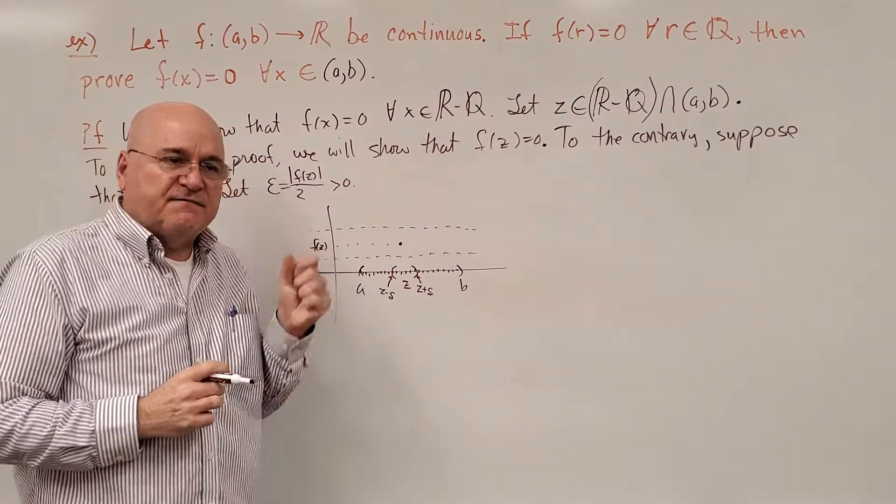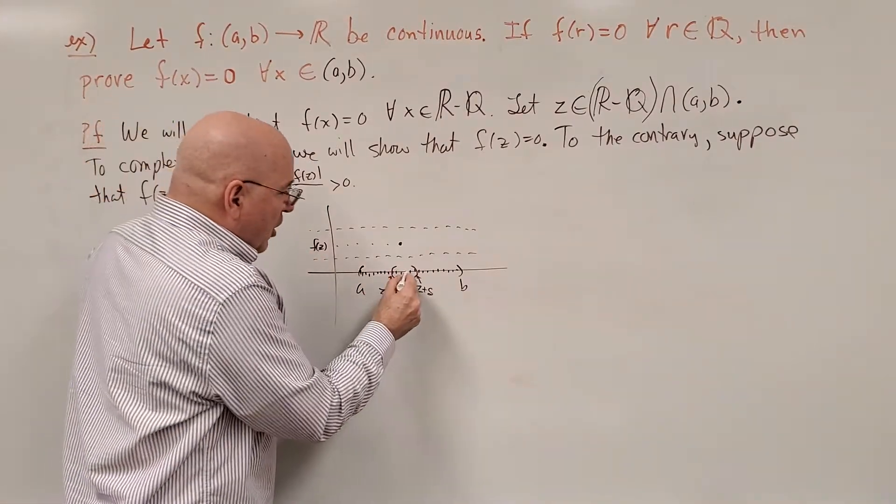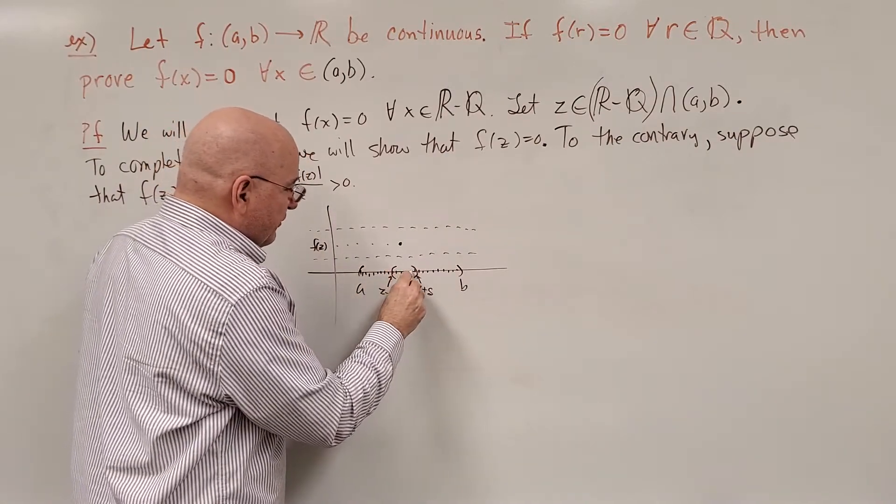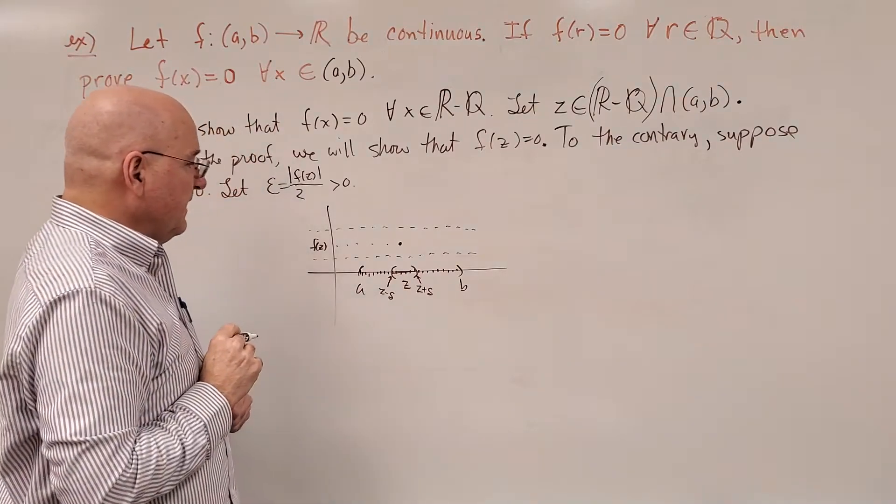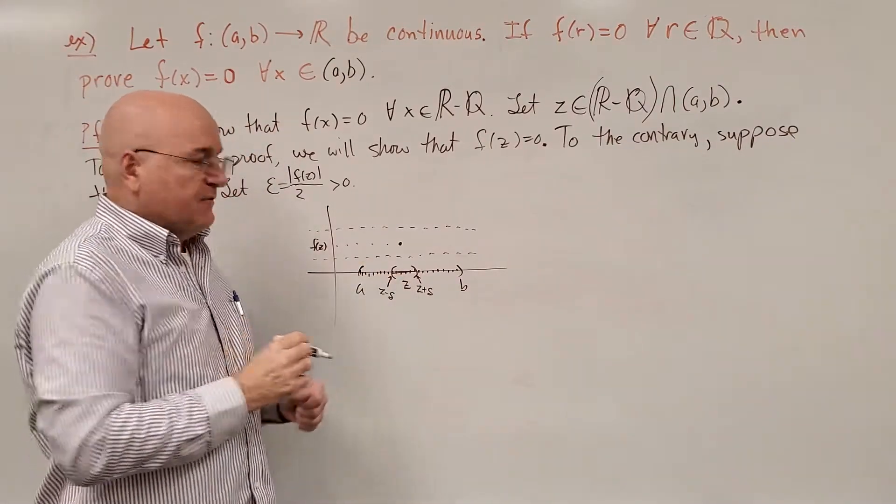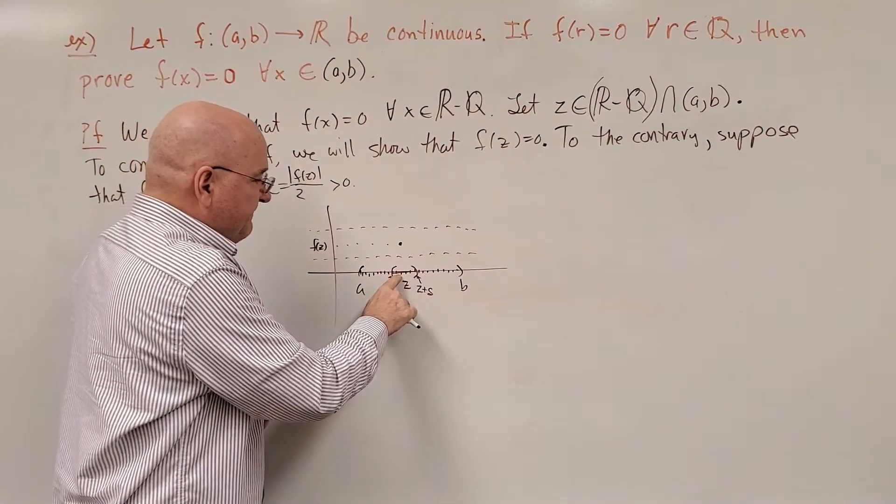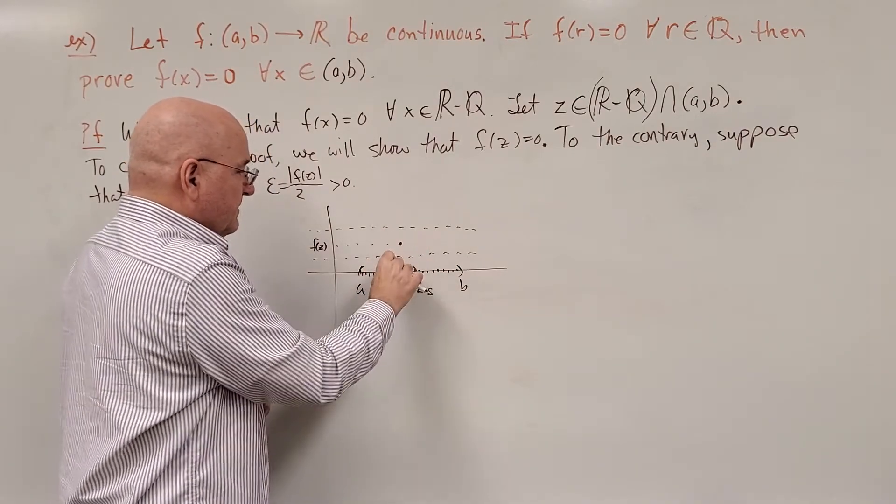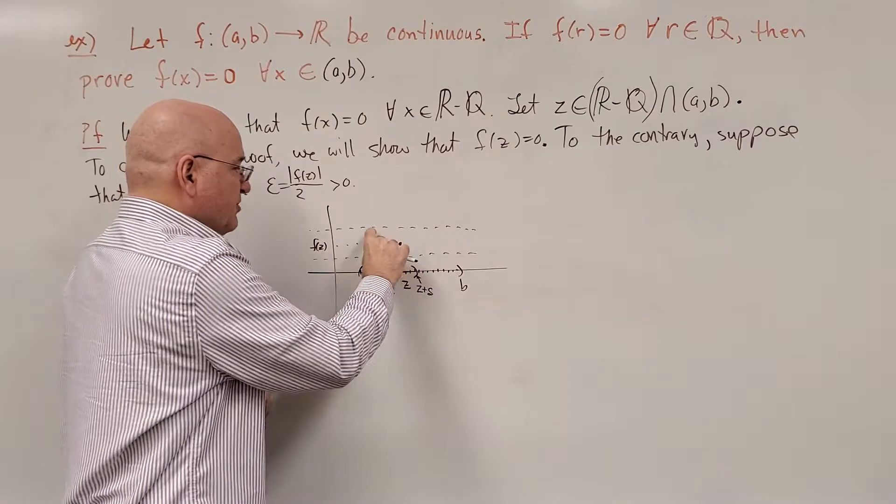such that for all of the x's that are within delta of z, which means they're in this interval, f(x), for every one of these, if there's an x in here, f(x), the height, minus the height f(z), is less than epsilon, which puts it in this little box right here.